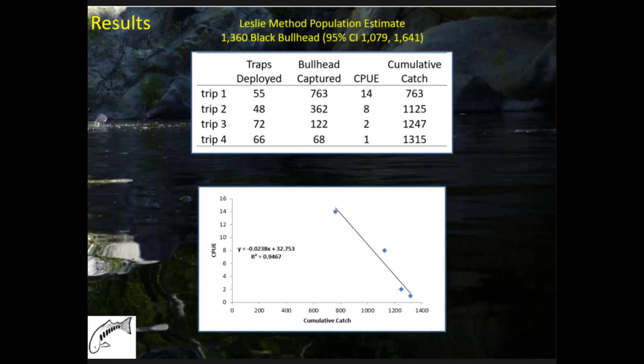Both objectives were met: capturing 1,315 fish reduced the population, and for the population estimate we used the Leslie method because we had unequal effort from one trip to the next. Regressing CPUE over cumulative catch, we arrived at a population estimate of 1,360. We were pleased to have the total number caught be within 100 of the actual estimate, though confidence intervals factor into that as well.